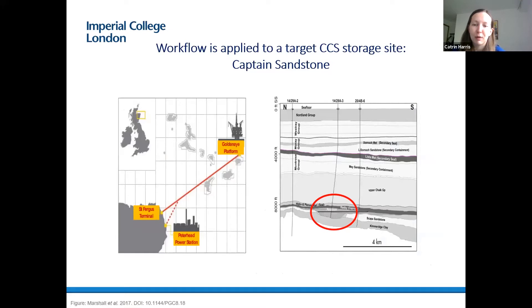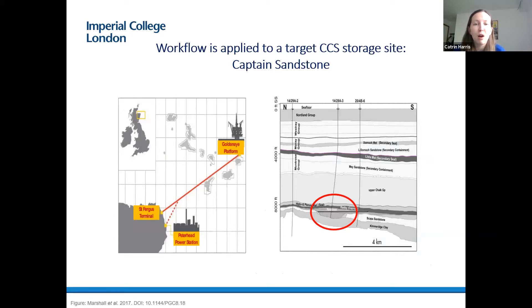I'm going to be talking about the potential importance of capillary heterogeneity trapping demonstrated within a target field-scale storage site. The case study is the Captain D sandstone from the Golden Eye Field, located in the North Sea. It's a poorly consolidated sandstone with thin mudstone layers. The Captain Sandstone was the target storage site for the discontinued Peterhead CCS project as part of the UK's 2012 commercialisation programme, and continues to act as a site of interest for future UK CCS projects.